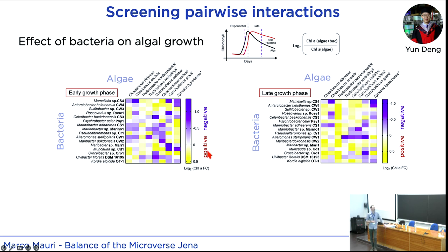In this matrix, yellow means the interaction is positive — the bacteria help the algae grow — and negative means the presence of bacteria represses the algae. Looking at the matrix, it already looks somewhat random. A single bacterium or single alga does not give the same effect on its partner every time, showing that there is probably no universality.